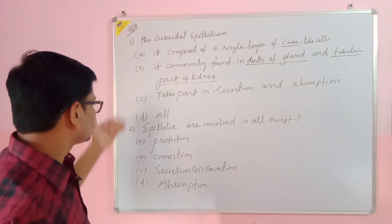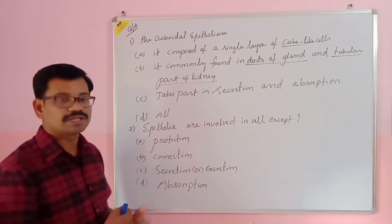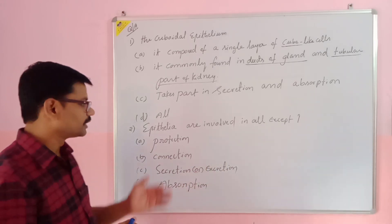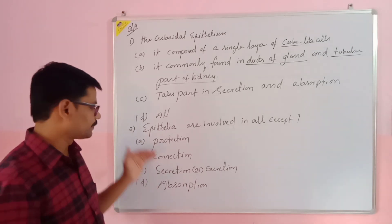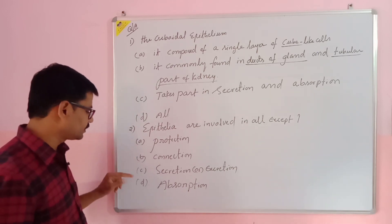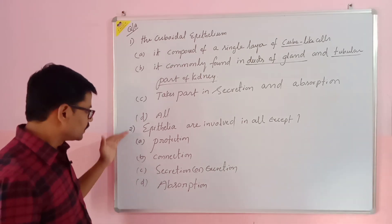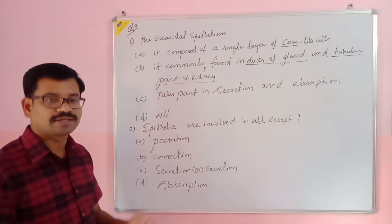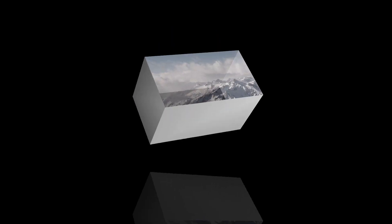Second question: Epithelial tissue is involved in all except — which option is not related to epithelial tissue? Option A: protection. Option B: connection. Option C: secretion or excretion. Option D: absorption. Find the right answer and write it in the comment box. If it is correct I will acknowledge it; if not, I will give the right answer. Thank you.